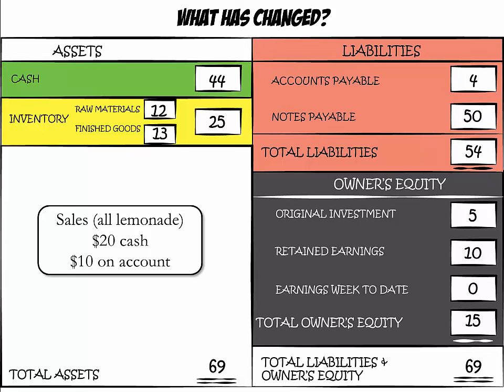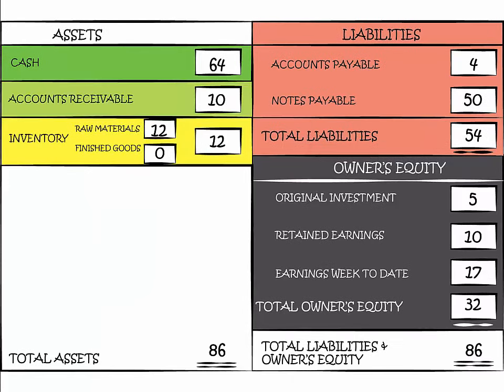We are not in balance — what else do we have to change? Your sales of $30 minus your cost of goods sold of $13 reflects a gross profit of $17, and we should add it to earnings week to date under owner's equity. Cash went up from $44 to $64, finished goods went down from $13 to $0, inventory went down from $25 to $12, and earnings week to date went up from $0 to $17. We are in balance.